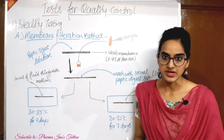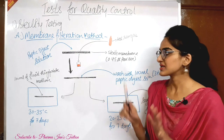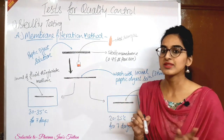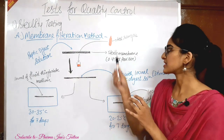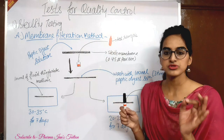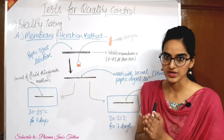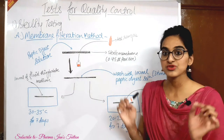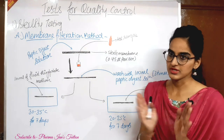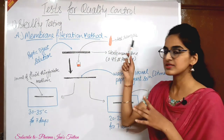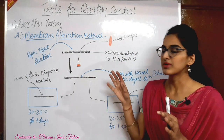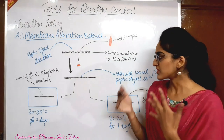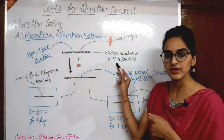In the membrane filtration method, we will filter the test preparation. First of all, I have made a vial — that is our test preparation, prepared within the manufacturing section. We take a membrane filter with a pore size of 0.45 microns. First, we moist this membrane so that filtration will work easily. We pass it first with a peptic digest solution.